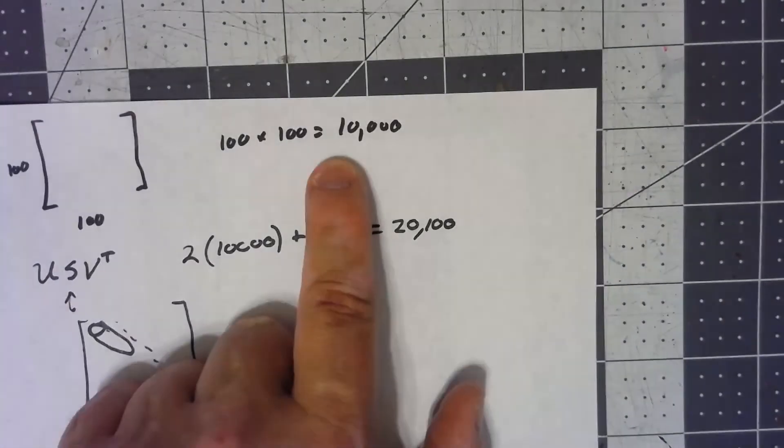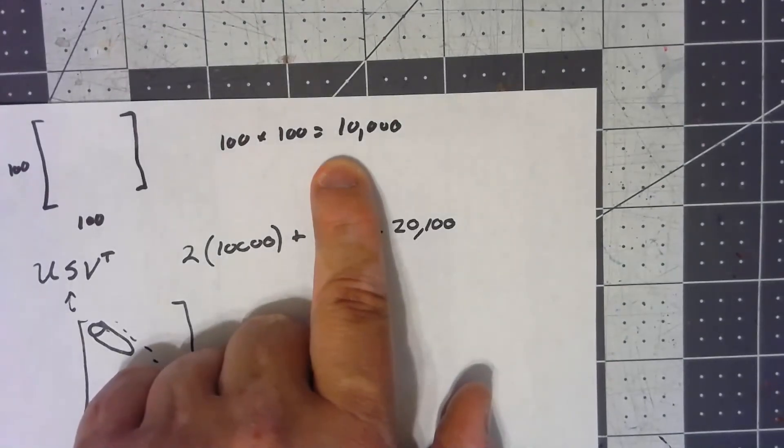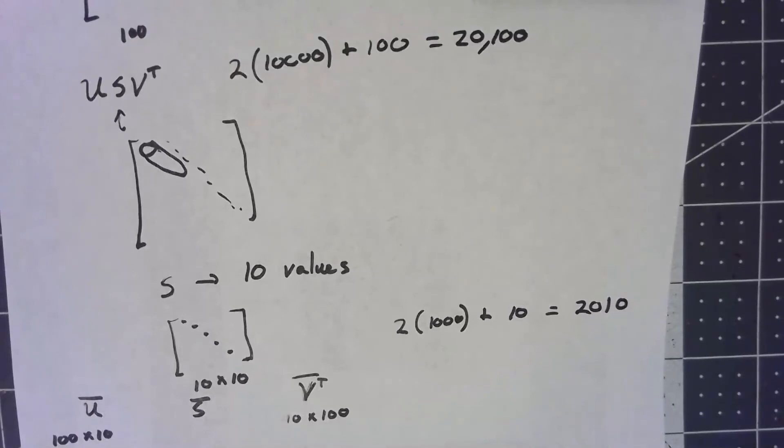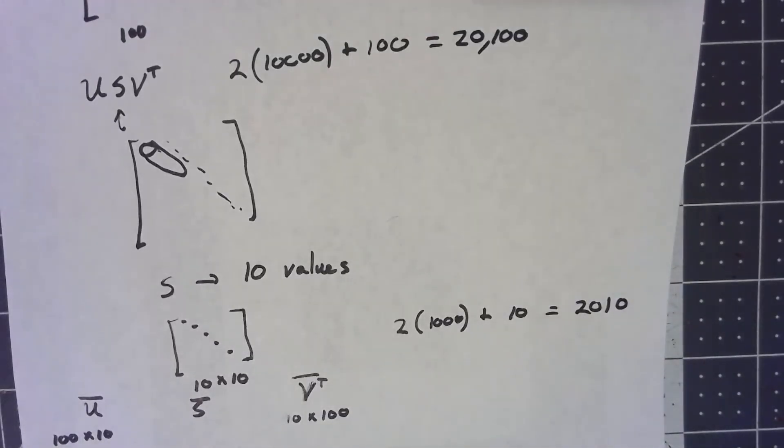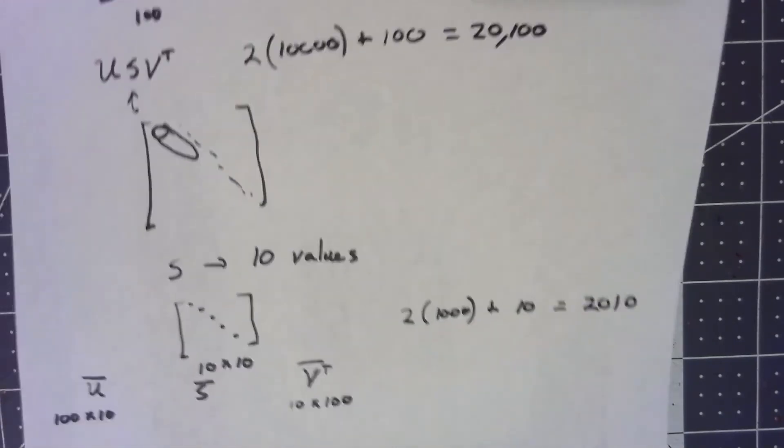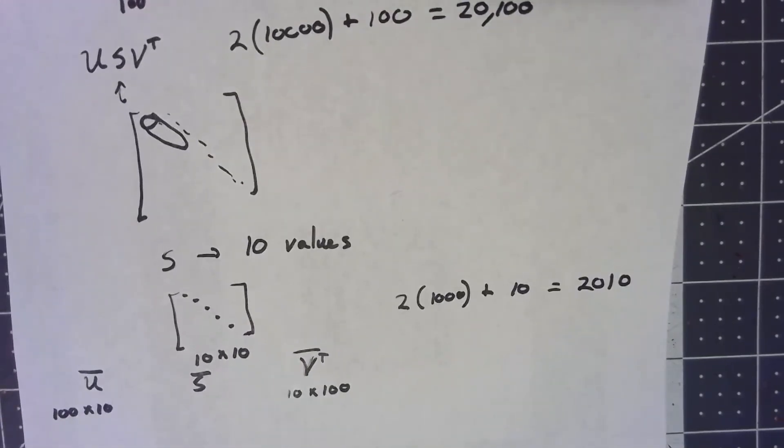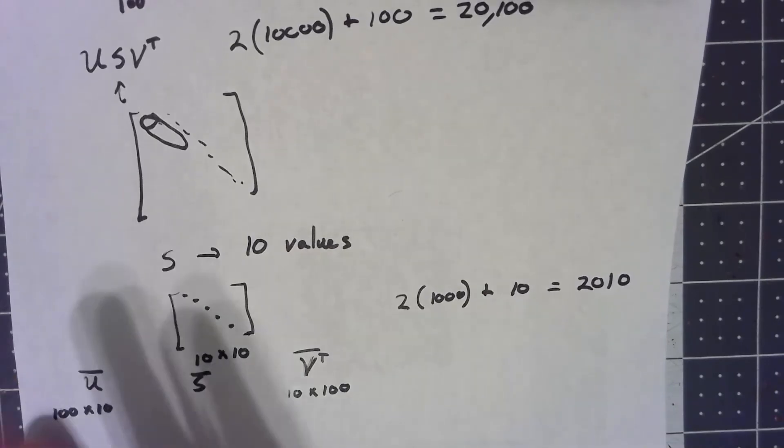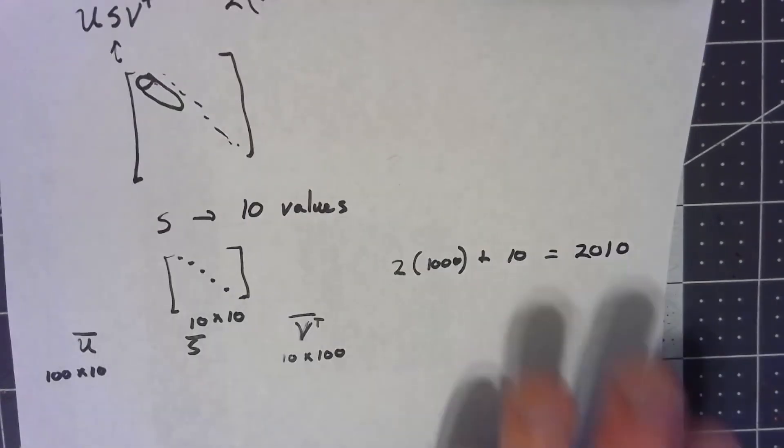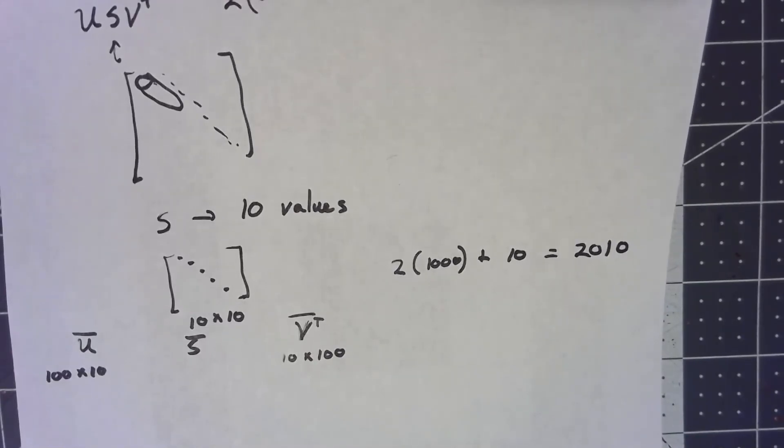Approximately one-fifth the size of what we took at the beginning. Again, it all depends on the application, it all depends on how close to the original matrix we need to be, but it's very common that something like this, those 10 entries, that one-fifth the amount of data, is going to be a very good approximation in many circumstances.